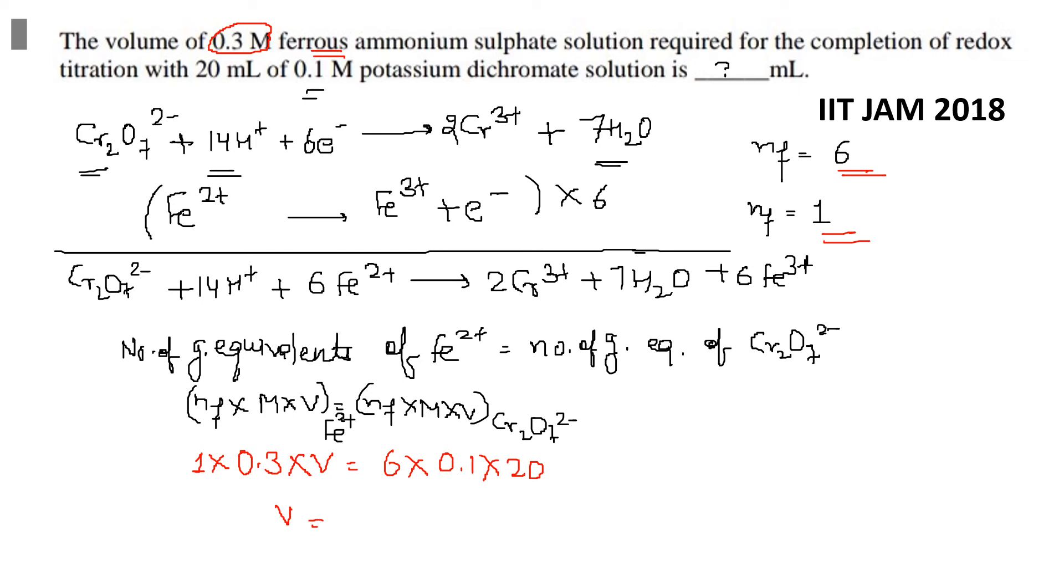From here, the volume will be equal to 6 into 0.1 into 20 divided by 0.3. When we calculate this, this comes out to be 40 ml. So from here, the answer: the volume of ferrous ammonium sulfate required will be 40 ml.